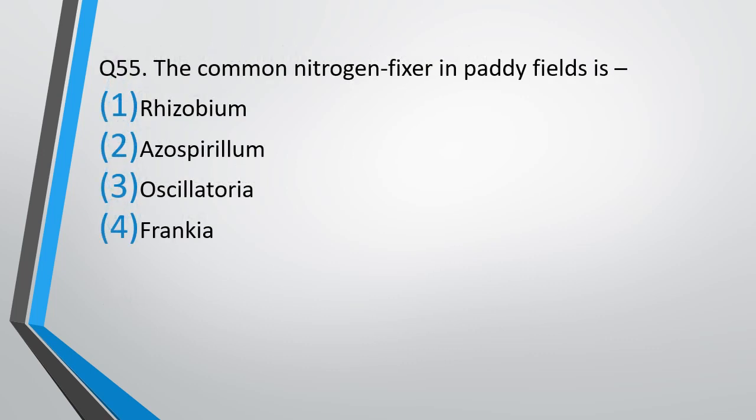Question number 55. The common nitrogen fixer in paddy fields is: rhizobium, azospirillum, oscillatoria, or frankia? The correct answer is option 3, oscillatoria.